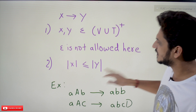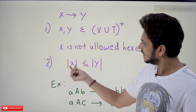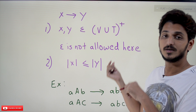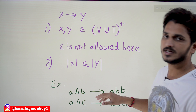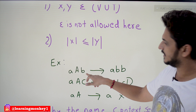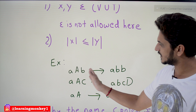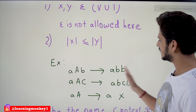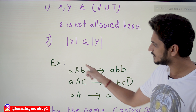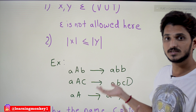The second condition is that the length of the left hand side production should always be less than or equal to the length of the right hand side production. For example, AAB → ABB is a valid context sensitive grammar production. The left hand side has three symbols and the right hand side also has three symbols — three is less than or equal to three, so yes it is accepted.